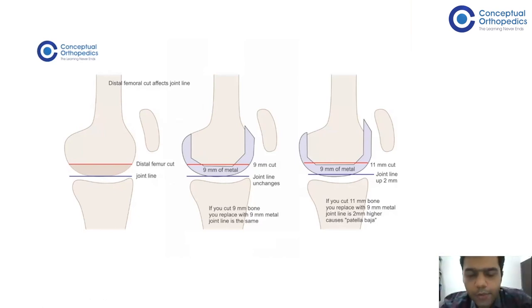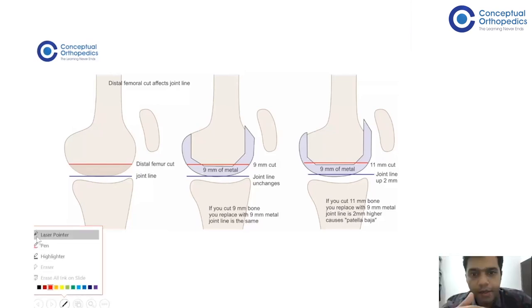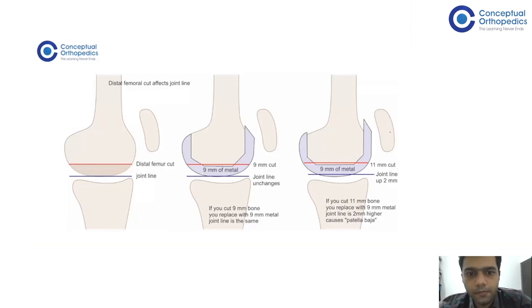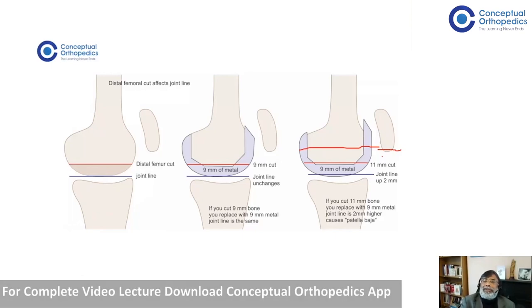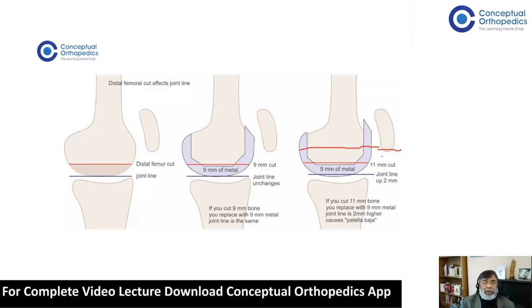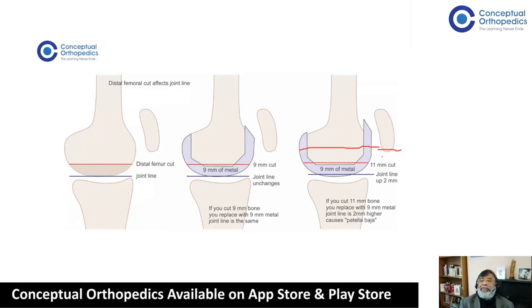The patella biomechanics is affected — the patella can slide down. The patella stays where it is, so if the joint line keeps going up, compared to that joint line, the patella becomes lower and lower — patella baja. Do you know some ways to assess your joint line during surgery? You can compare with the level of the lower pole of the patella.